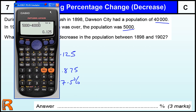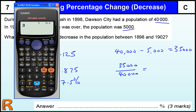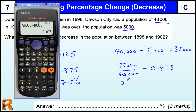Another way of doing it is to work out the difference between the two. The decrease is 40,000 minus 5,000, which is 35,000. And 35,000 out of the original 40,000 is the decrease. So 35,000 divided by 40,000 gives us 7/8 or 0.875. So the percentage decrease is 0.875 times 100, which is 87.5% for three marks.